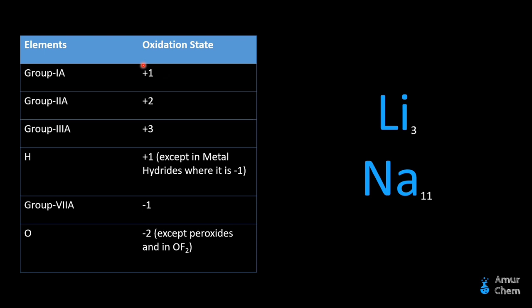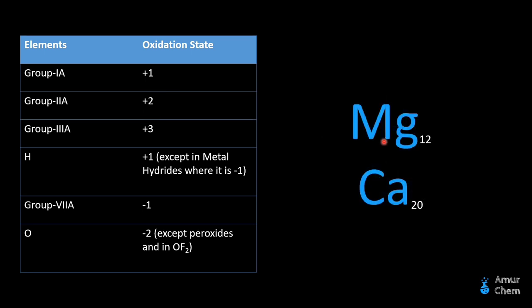In the same way, Group 2A elements have an oxidation state of positive 2. For example, magnesium and calcium. Both have two electrons in their valence shell, so these elements will lose those two electrons and acquire a positive 2 oxidation state, forming a dipositive cation.